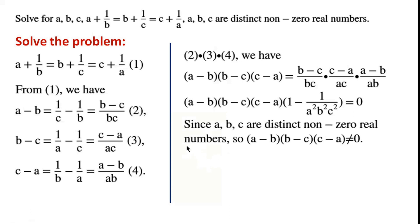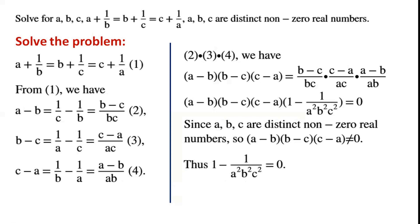Since A, B, C are distinct non-zero real numbers, A minus B times B minus C times C minus A does not equal zero.